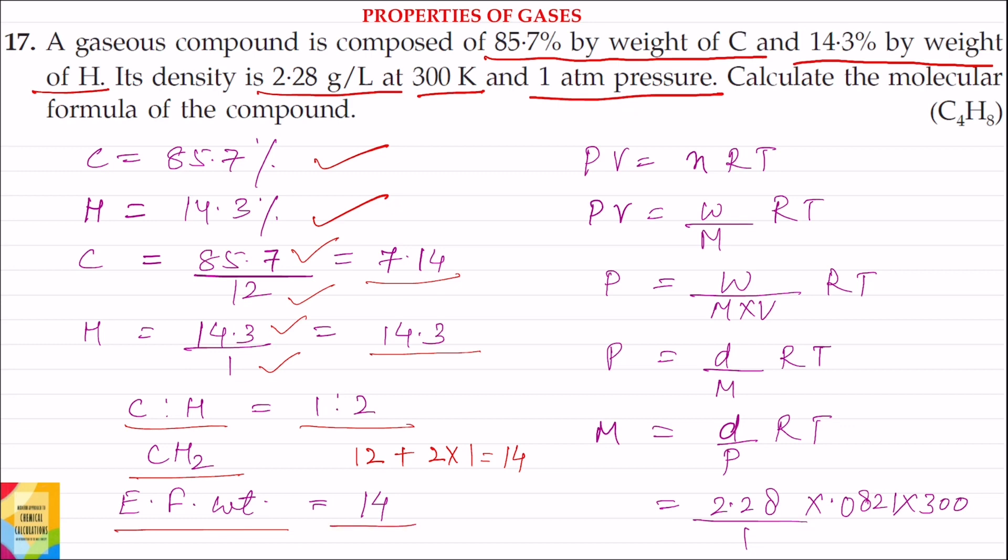Now applying the formula PV is equal to nRT. n is the number of moles, therefore we can write PV is equal to W by M RT. W is the weight, M is the molecular weight. From this, P is equal to W into RT divided by M into V. Now in this formula we can see that weight divided by volume is density, so we can write it as P is equal to D into RT divided by M. From this, M, that is the molecular weight, is equal to D into RT divided by P.